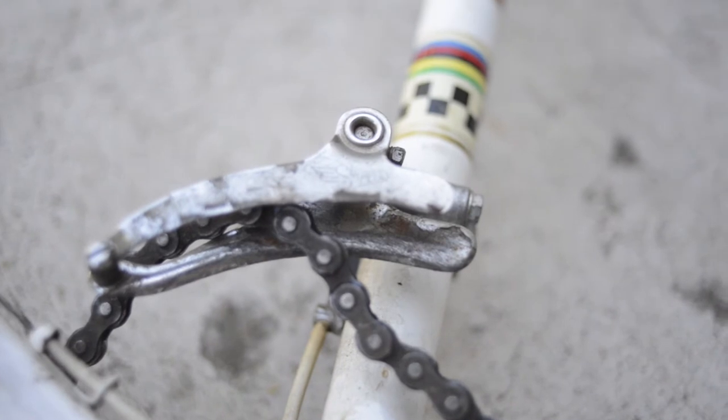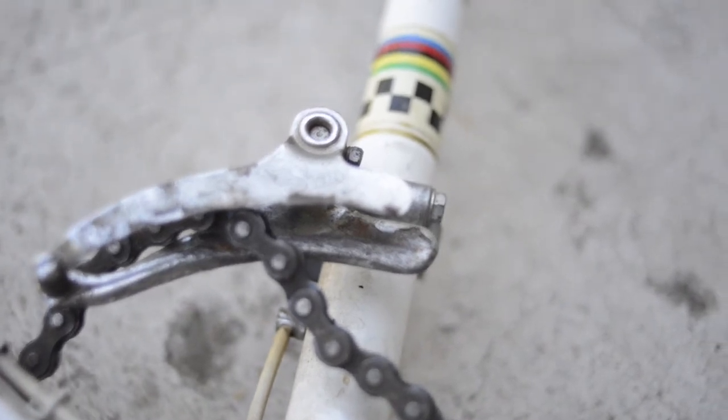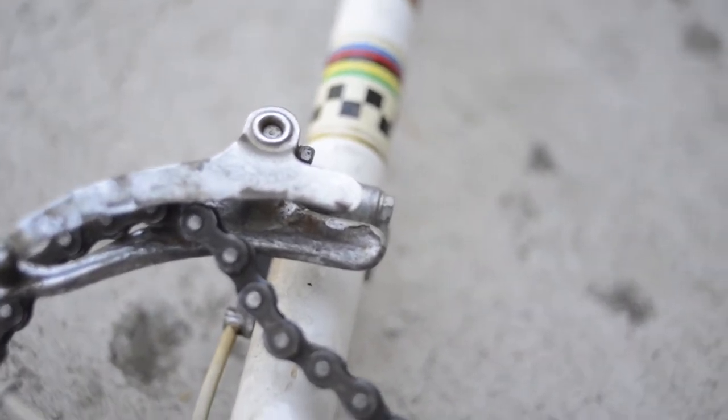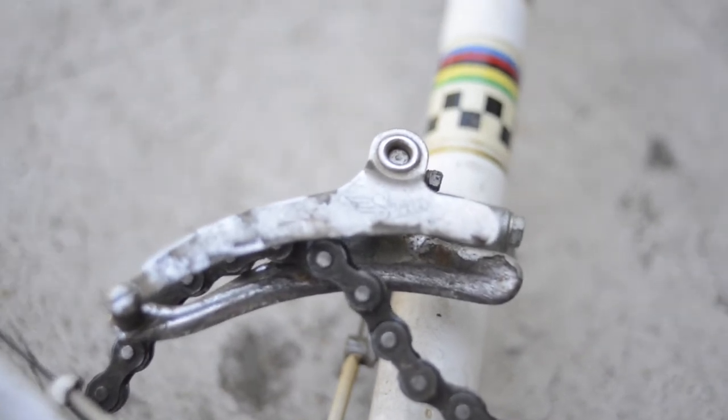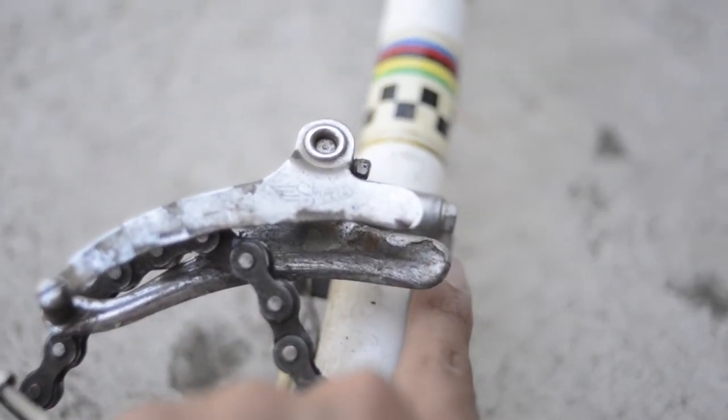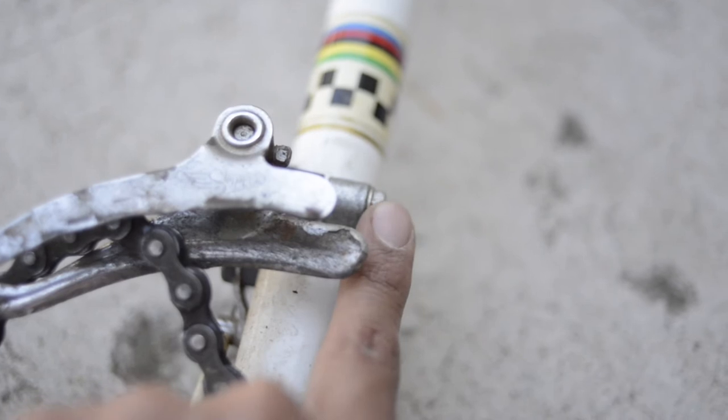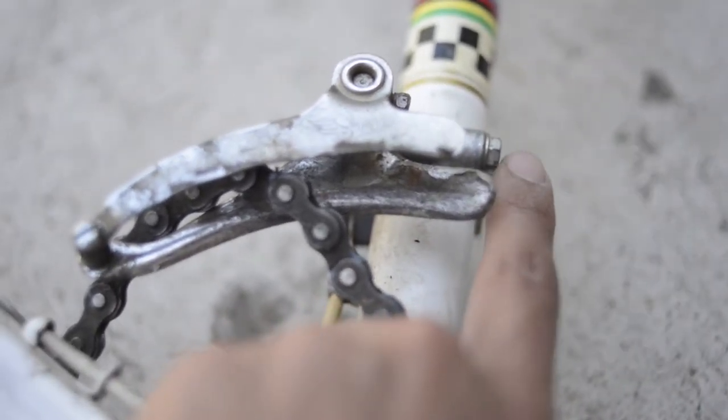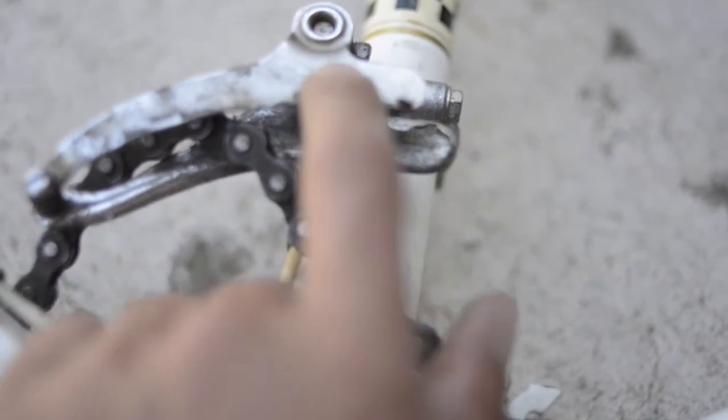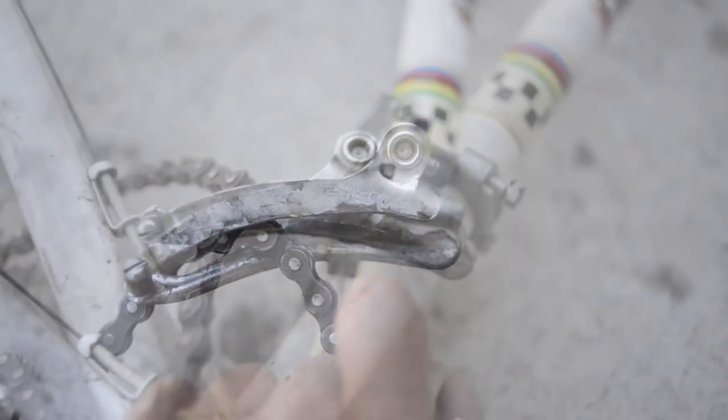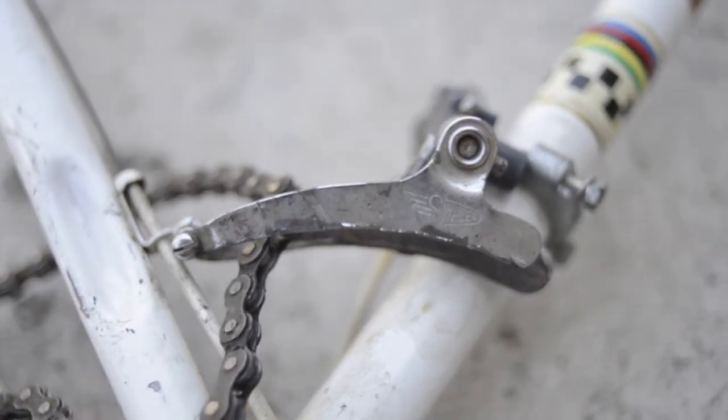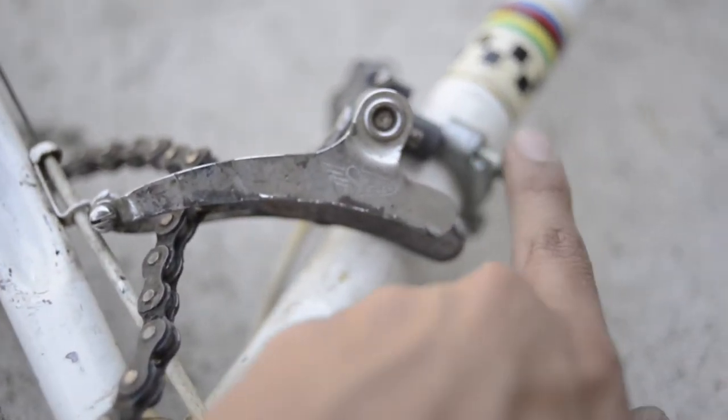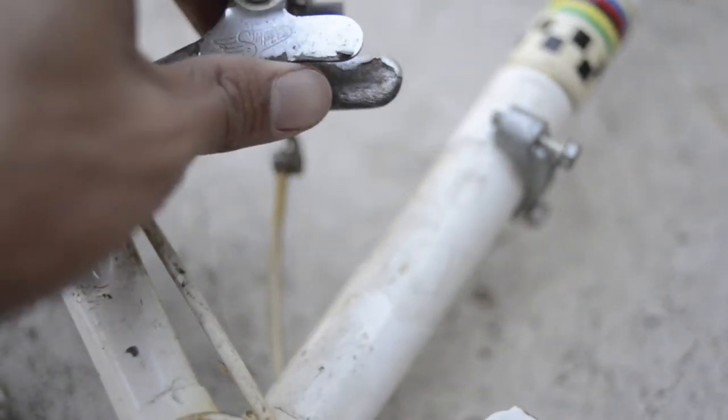All right, so here we are. Front derailleur. I think it should be pretty simple to take off. I'll take a look at it. Should be pretty simple. I think we just need a flat head to get rid of the clamp that's down here on the mainframe. As you can see, there's here, there's two, one, two, both flat heads. Should we go to just undo that and probably this should just slide off. So as I mentioned, yeah, pretty simple. Two flat heads, comes off. It's loose.